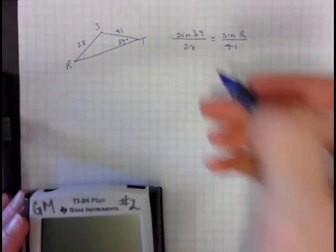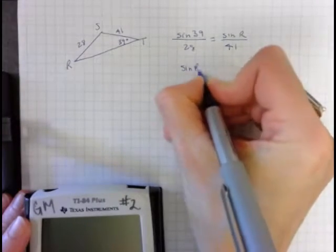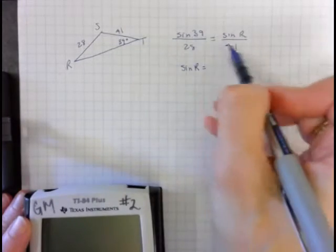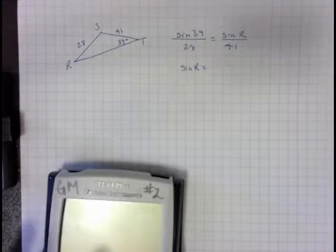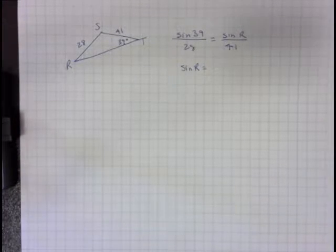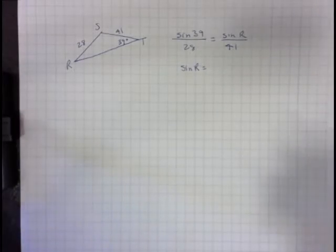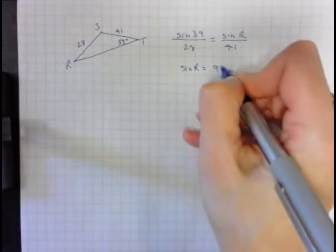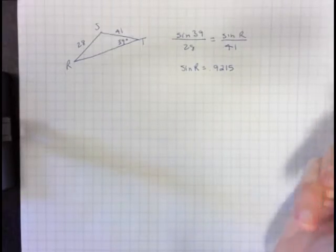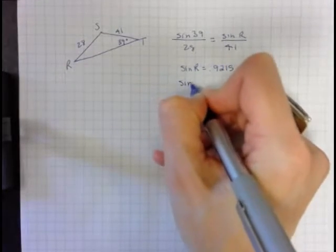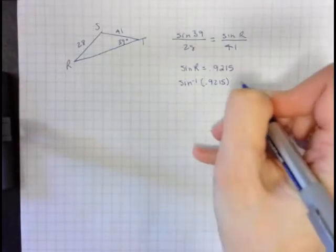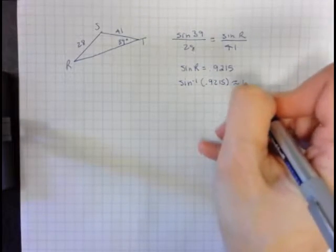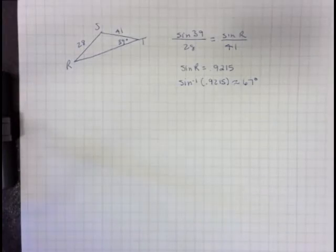With my calculator, I know that sine of r is going to equal sine 39 times 41 divided by 28, and I do that in my calculator and I get 0.9215. And then I do the inverse of that and I get approximately 67 degrees. I'm just going to call it a whole number just for now.